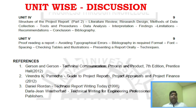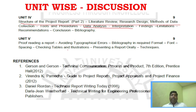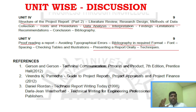Unit four covers the structure of project report two, which includes literature review, research design, methods of data collection, and data analysis and interpretation — all very important areas. Unit five covers proofreading and bibliography, which is very important. It involves font checking, checking tables — it is a very simple subject overall.